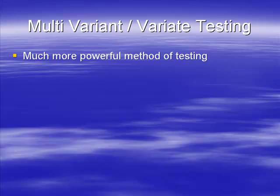Split testing is a little bit on the slow side. If you really want to do well, you want to use something called multivariate testing. This is a very powerful method of testing and is actually the best form to use. If you're going to buy software to do your testing, you want to invest in good multivariate testing software. This can cost upwards of a hundred dollars — good software is talking between five hundred and a thousand dollars.